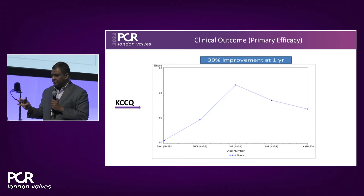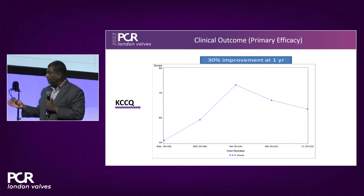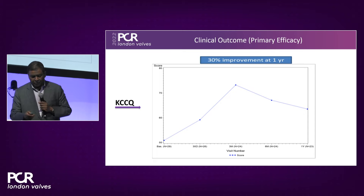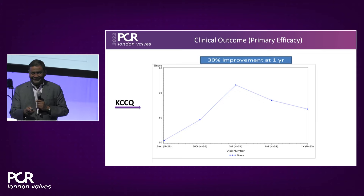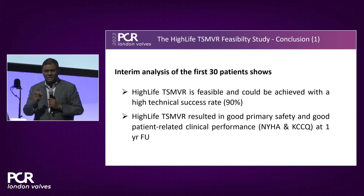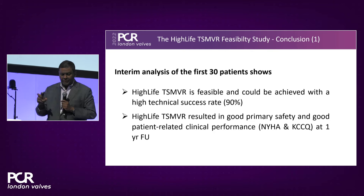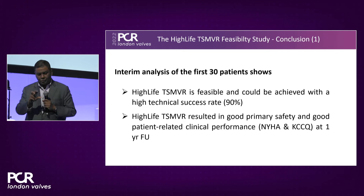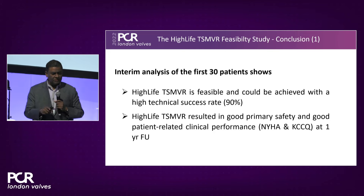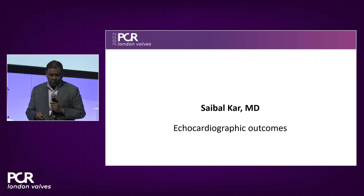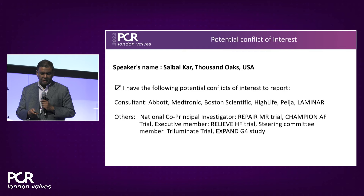Saibal Kar presents echocardiographic outcomes on behalf of all investigators. This interim analysis covers the 46 patients performed in Europe and Australia; the data presented represents the 30 patients who completed one-year follow-up. The early feasibility data from the United States is excluded and will be shown separately.